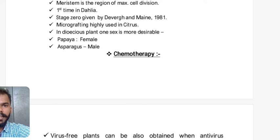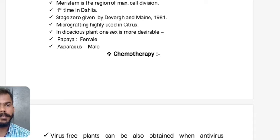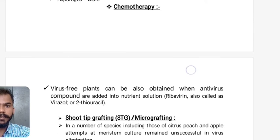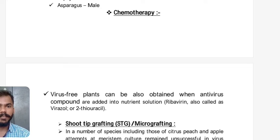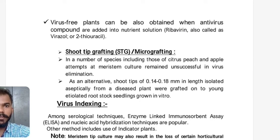Micro grafting is highly used in citrus. In dioecious plants, sometimes the male is more desirable and sometimes the female. In papaya, only females set good fruit so females are desirable, whereas in asparagus, only males give the productive part (the arrow/spear), so males are desirable.